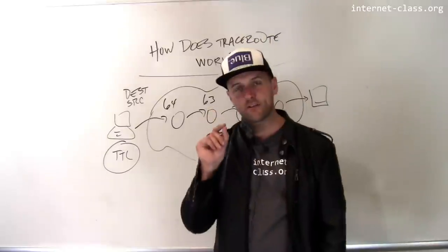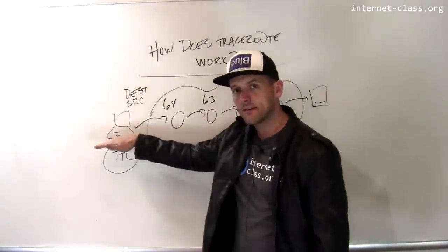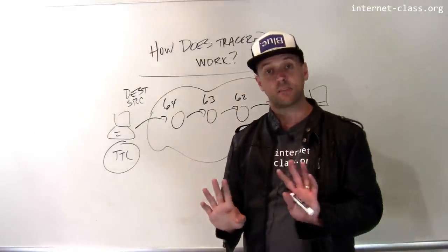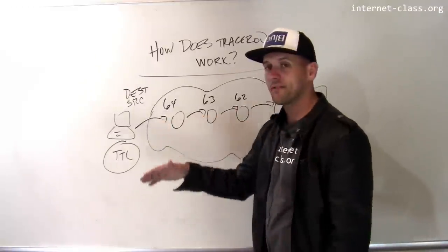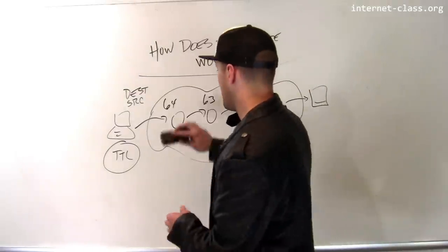When a packet expires because the time to live field goes to zero, the router sends a message back to the source saying, oh, by the way, I dropped this packet. Remember, IP's best effort, so there's lots of dropped packets, and all that message does is say I dropped the packet. So here's what traceroute does to find out the identity of these routers.